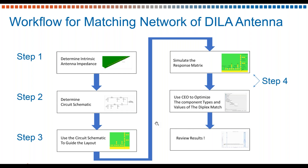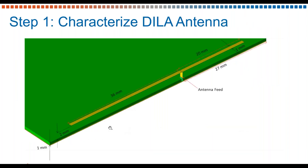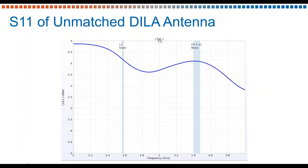So here we have an example of an antenna. We've got a substrate, a ground plane, and a port feeding the antenna directly. Materials have been assigned and we have our grid and meshing set up so we can request results and run an FDTD simulation to calculate the unmatched antenna performance. Here we have S11 of the unmatched antenna — this looks like what you might expect, and this will serve as our FDTD block for evaluating our schematic designs.